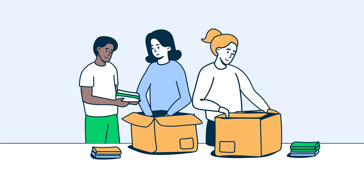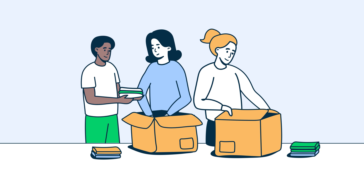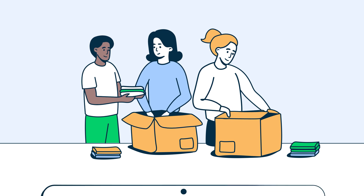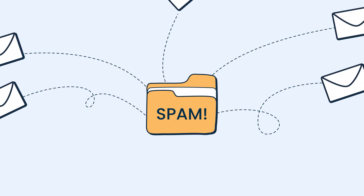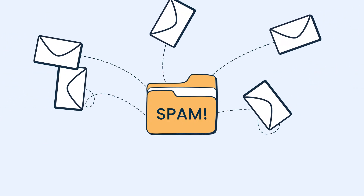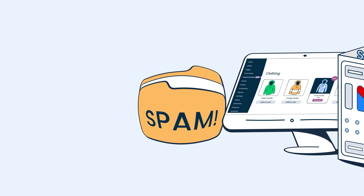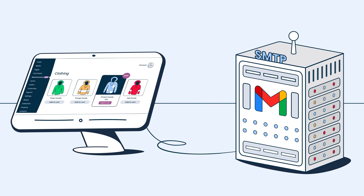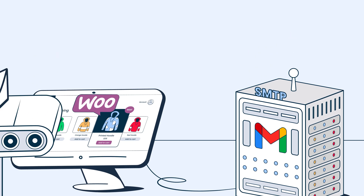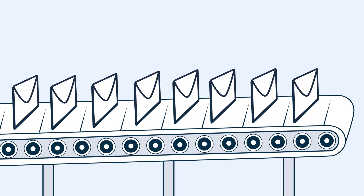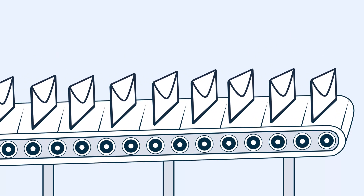Imagine you're a small business owner using WooCommerce to manage orders. You send confirmation emails, but they keep landing in spam, frustrating customers and disrupting sales. By properly integrating Gmail SMTP with your WooCommerce site, your emails can become automated and get reliably delivered with no need for manual intervention.